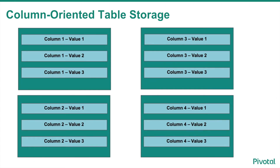In a column-oriented table, there is a file created for every column that's defined in the table itself. So if there are 30 columns in a table, you would have at least 30 files on disk to store the data. All of the values for a given column for all the rows in the table are grouped together.